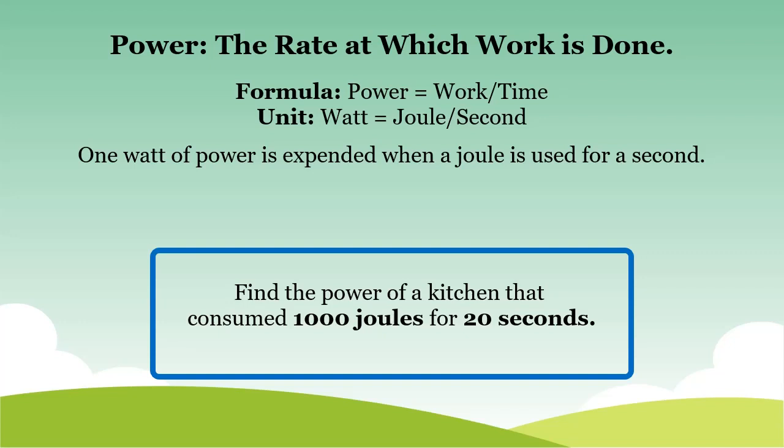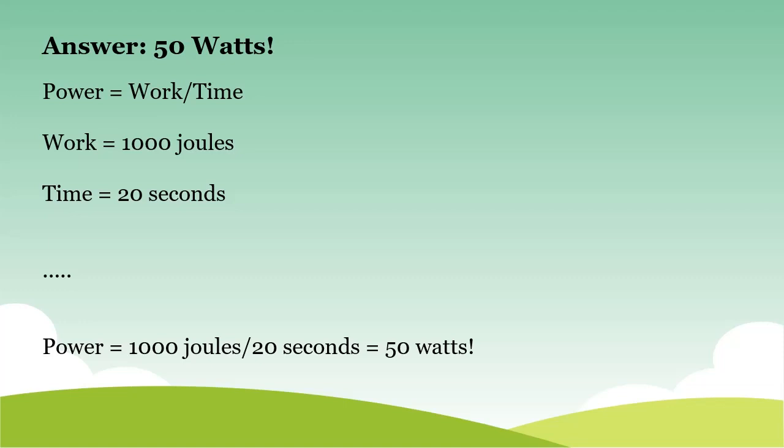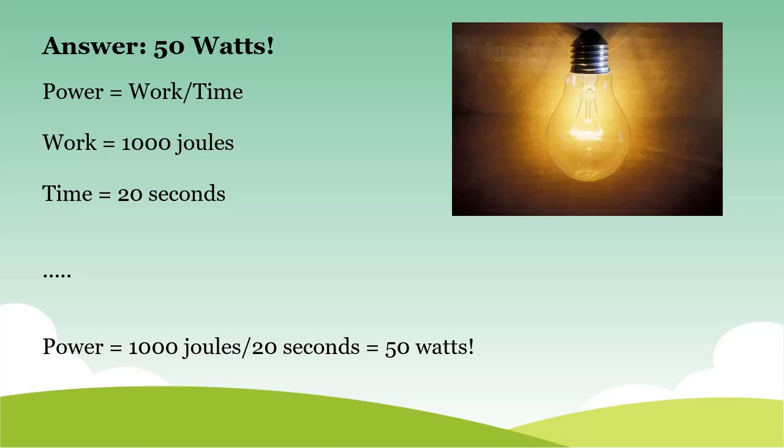Can you solve this practice problem? Find the power of a kitchen that consumed 1,000 joules for 20 seconds. Pause the video here before I show you the answer. And the answer is 50 watts — good job! Power is equal to work over time. The work was 1,000 joules and it took 20 seconds. After dividing those two, we get 50, and we have to make sure to include the unit: watts.